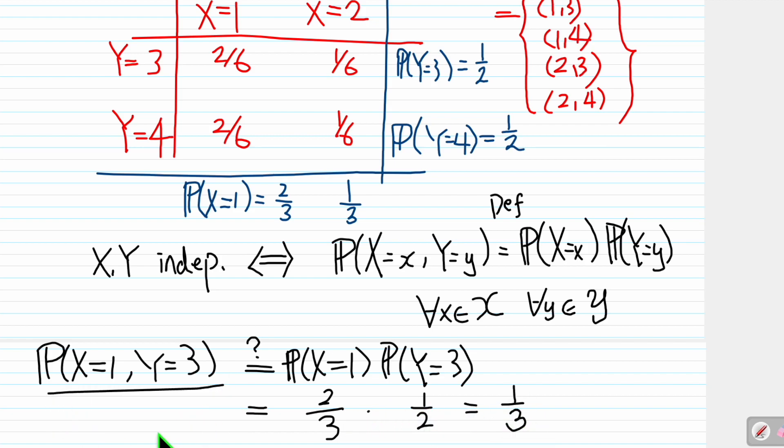Now we want to find this thing. What is this thing? This thing is (X=1, Y=3), so it's this thing. (X=1, Y=3) is 2/6, which is what? 1/3. Okay, this one is yes. Check the other one.